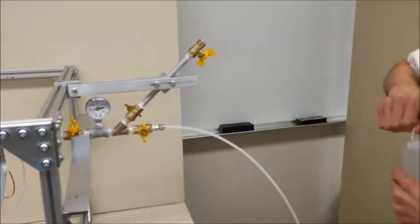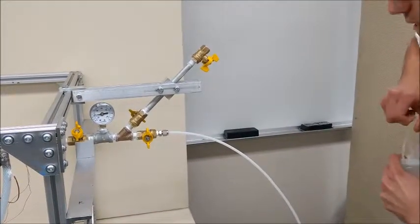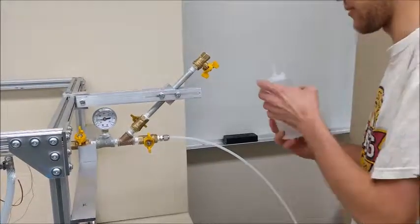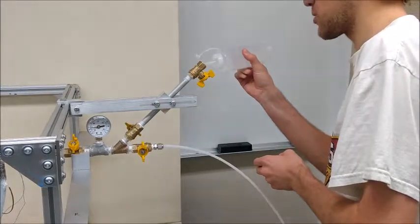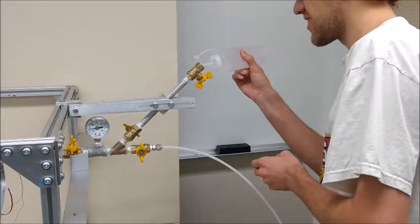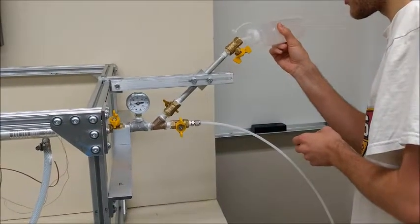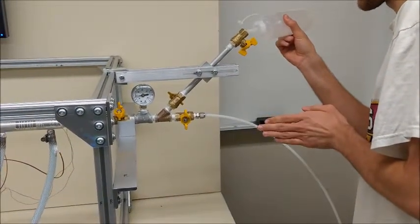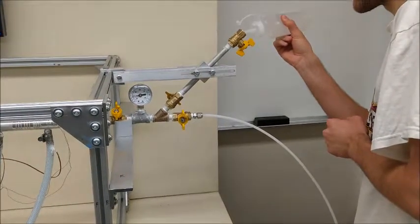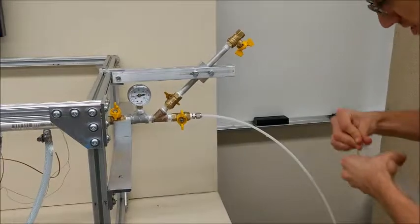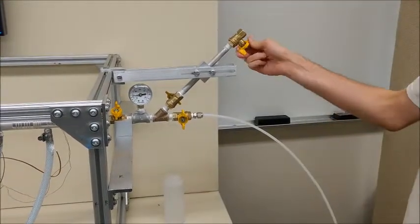Now we're going to load the working fluid into the heat pipe. We're going to do this by putting the working fluid into the pipe sticking up with the valve on the bottom of that pipe closed. Now to make sure that there is no air in the pipe, make sure to fill the working fluid up to the top of the other valve and then shut it.